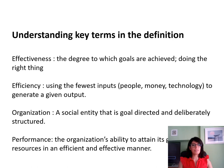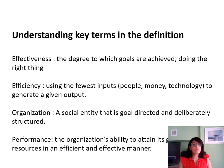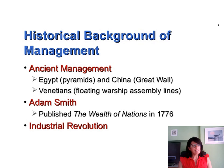There are some key terms in the definition you really need to understand. The first is effectiveness — the degree to which goals are achieved, or doing the right thing. The next key term is efficiency: how can you use the fewest inputs — money, people, technology, time — to generate the output you want? The fourth key term is organisation: a social entity that is goal directed and deliberately structured, whether for profit or not for profit. And finally, performance is the ability of an organisation to achieve its goals through using its resources effectively and efficiently.